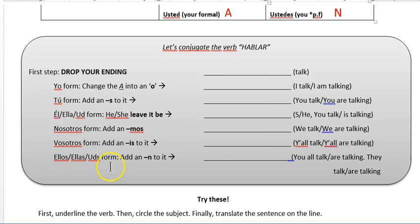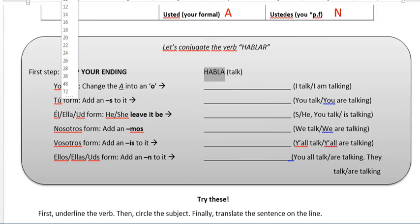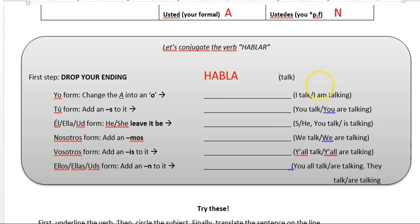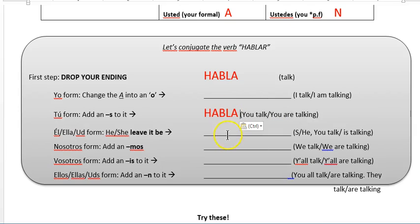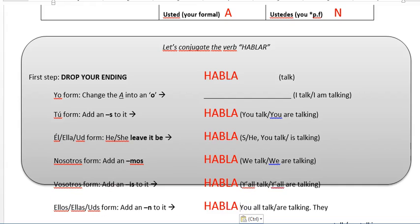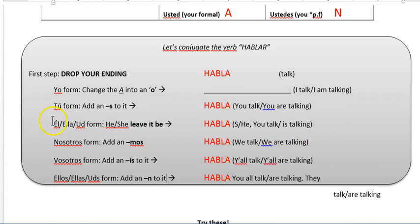Moving on to hablar. First we need to drop our ending, which gives us 'habla' — which means talk. And then we add our endings. They should all start with habla, habla, habla, habla. And now we can make our change.